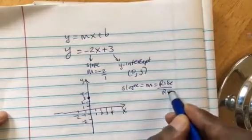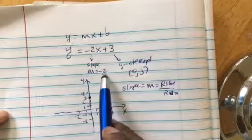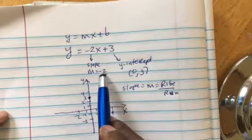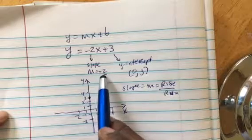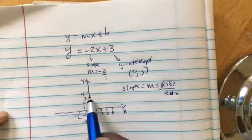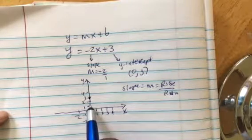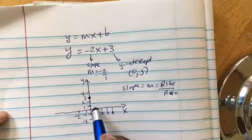Okay, now we started with (0, 3). Now we use the slope. So that negative, you can put it on top or you can put it at the bottom. If we put it on top, then instead of rising we fall two points. So that would be from (0, 3), so that would be 1, 2. You don't make a dot until you do the run, so we run one point to the right, so we'll make a dot right there.